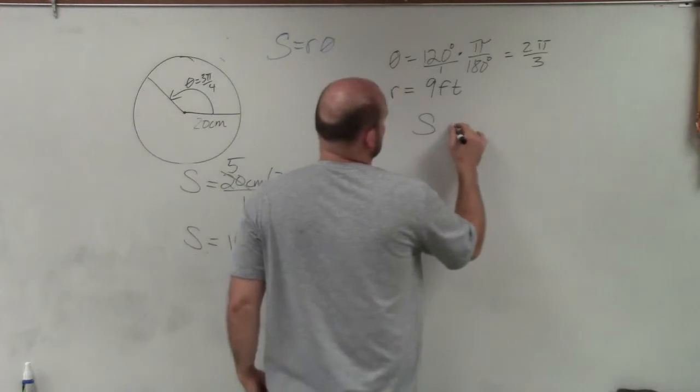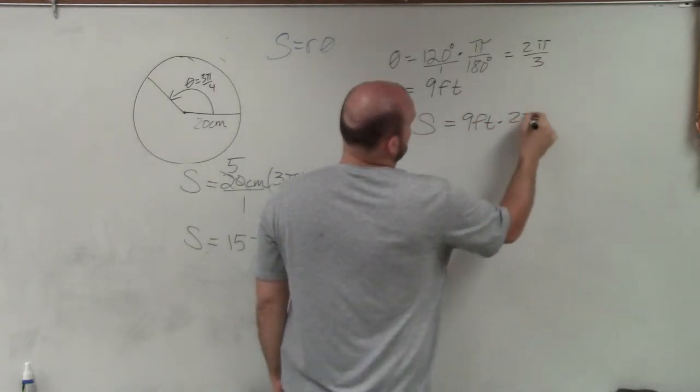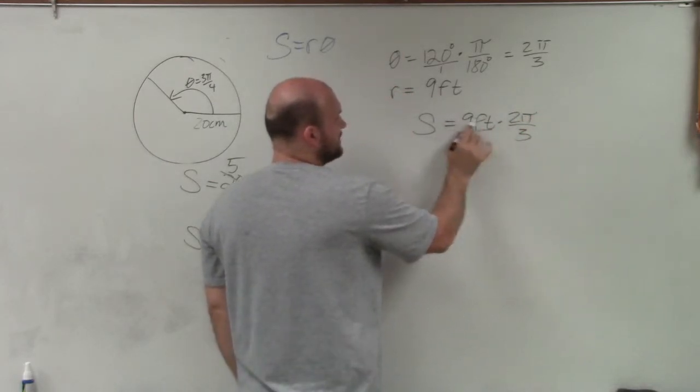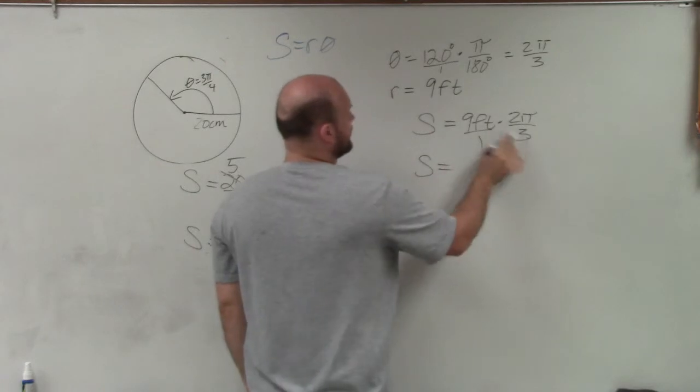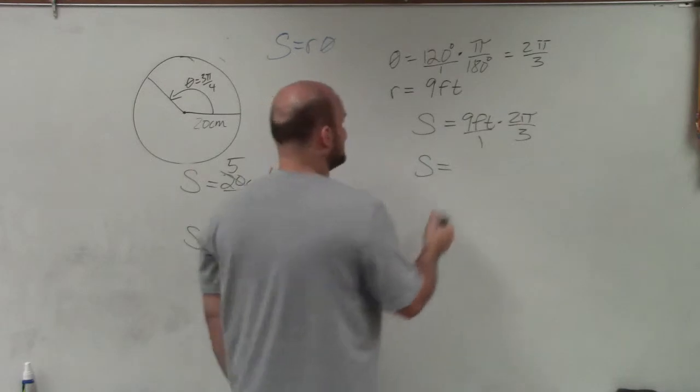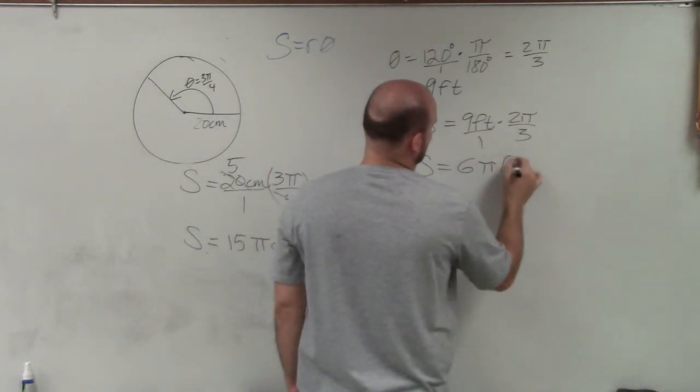So now I'll simply just do S equals R, which is 9 feet, times my angle in radians. Again, I can reduce this. The 3 divides into the 9 three times, and then 3 times 2 is 6. So I have 6π feet.